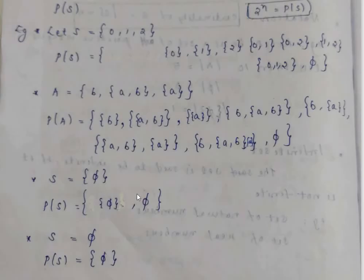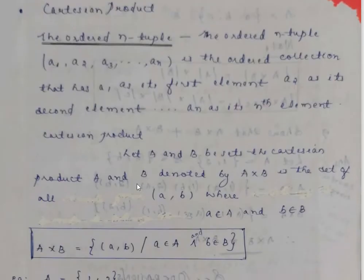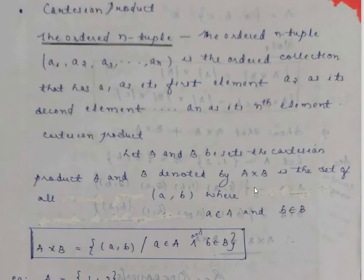The ordered n-tuple (A1, A2, ... An) is the ordered collection that has A1 as its first element, A2 as its second element, and so on up to An. The Cartesian product A cross B is defined as the set of all ordered pairs (a, b) such that a is an element of A and b is an element of B.